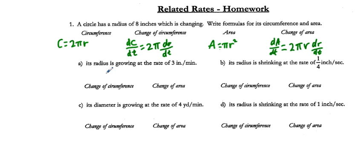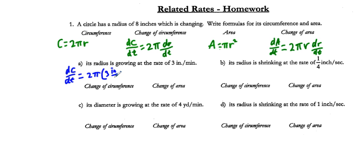If the radius is growing at a rate of 3 inches per minute, we can just plug into the circumference formula. dC/dt is equal to 2π and dR/dt is 3 inches per minute, so that's going to be equal to 6π inches per minute.